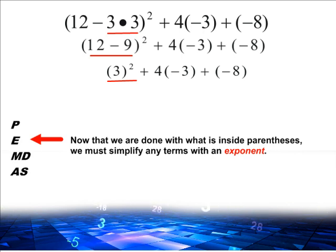Now that we have done everything inside parentheses, we go to the next step of the order of operations, which is to perform any exponents. The only exponent we have here is 3 to the second power, which is 3 times 3.